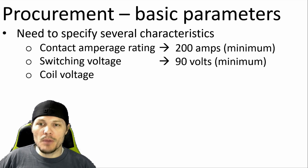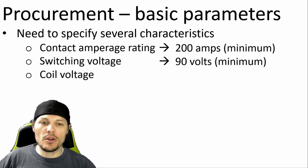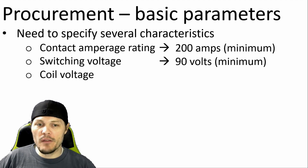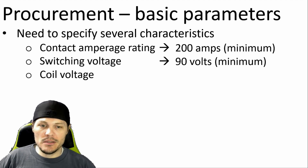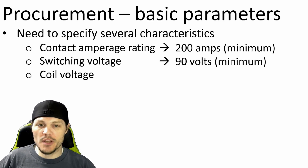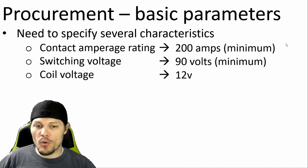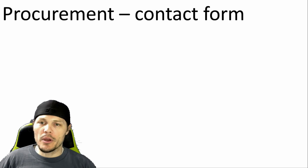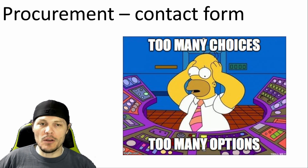If I wanted to operate the contactor with my full battery voltage, I would need the coil voltage to be 72 volts. Looking around a little bit, it seems like there's a much larger market for contactors with coil voltages in the 12-volt, 24-volt, and 48-volt categories. That being the case, I'm going to assume I want to operate the contactor with the step-down voltage from my DC-DC converter. So let's set my required coil voltage to 12 volts. Even when narrowing my search with those parameters, there's still a ton of options.